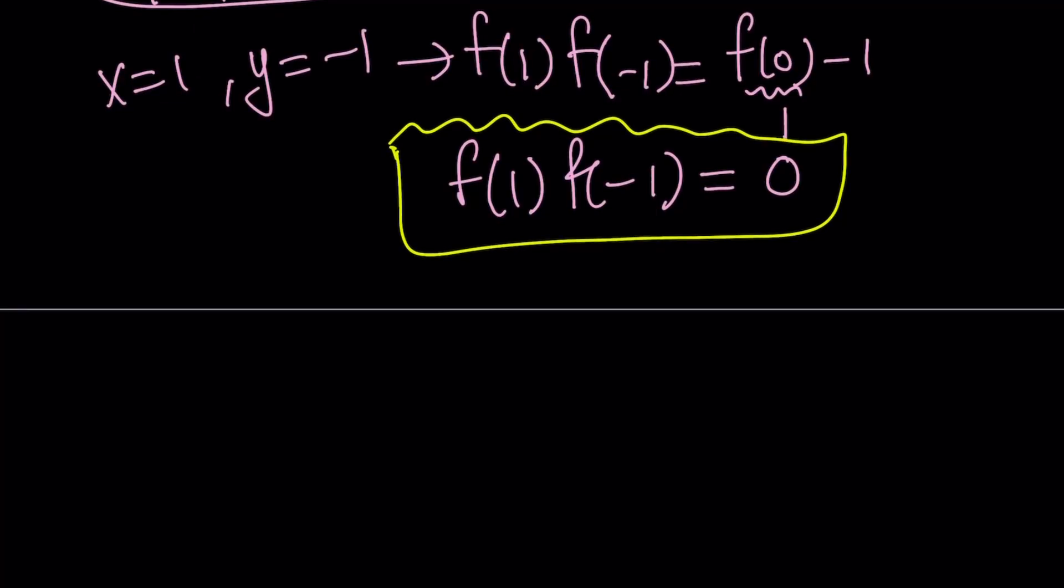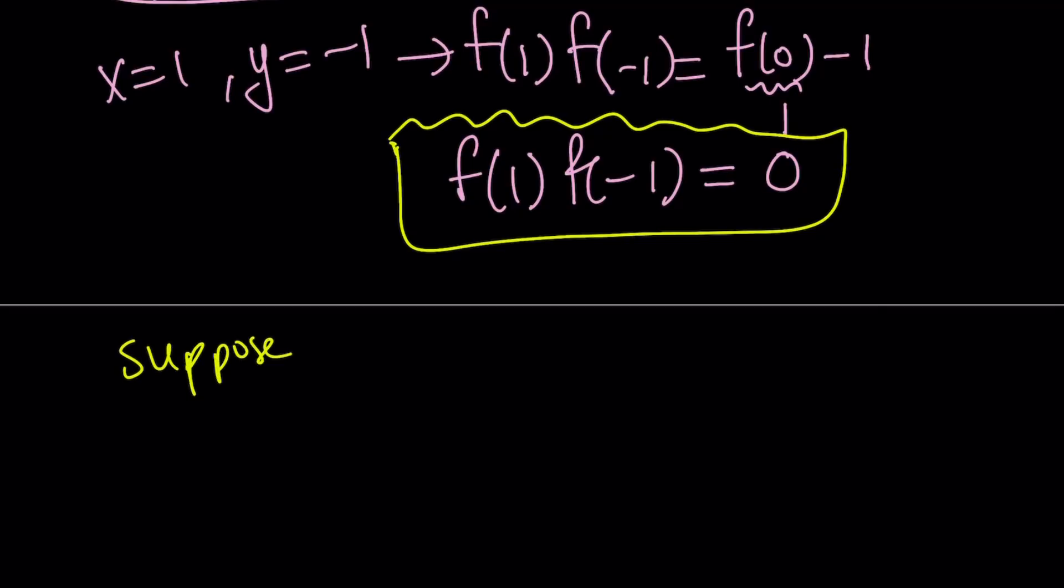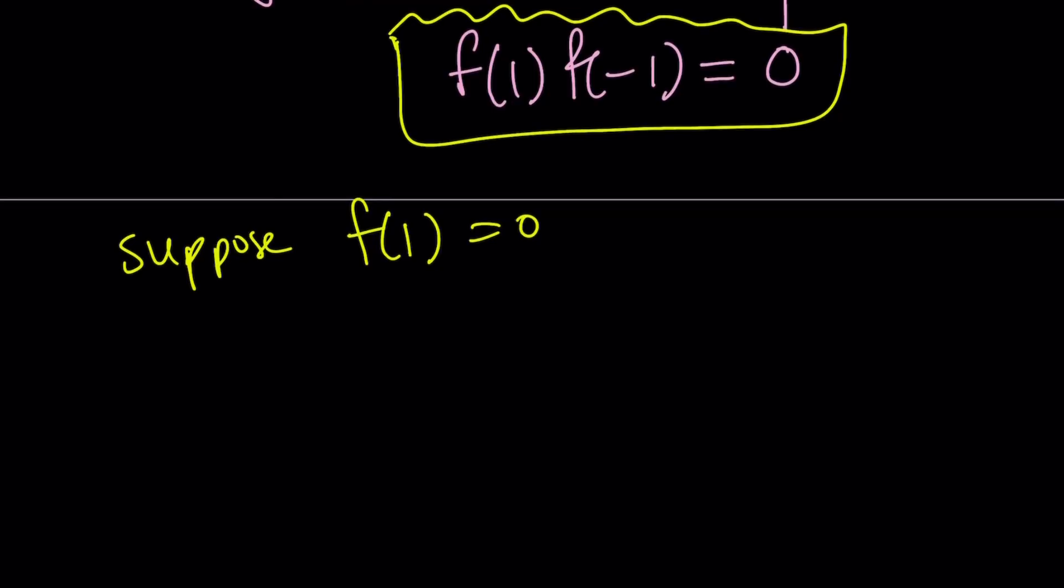Suppose f(1) is equal to 0. Now, this is going to give us a solution. Now we're going to look at the second case. If f(1) is equal to 0, I'm going to replace x with z minus 1. The reason behind this is I don't want to use y or x again. You could, I mean, it's no big deal. But I just want to use a different variable. And we can always convert something like f(z) to f(x) easily because we can replace z with x.